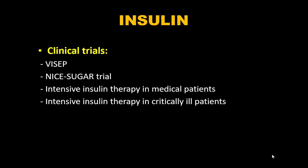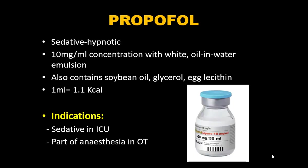Clinical trials on insulin in ICU: the initial Van den Berghe trial on surgical ICU patients found intensive insulin therapy had a survival benefit. Subsequent trials — intensive insulin therapy in medical patients, BICEPS, and HI-SUGAR — found no mortality benefit, with more hypoglycemia episodes in the intensive insulin group. The surviving sepsis campaign advises targeting blood glucose less than 180 mg/dL.